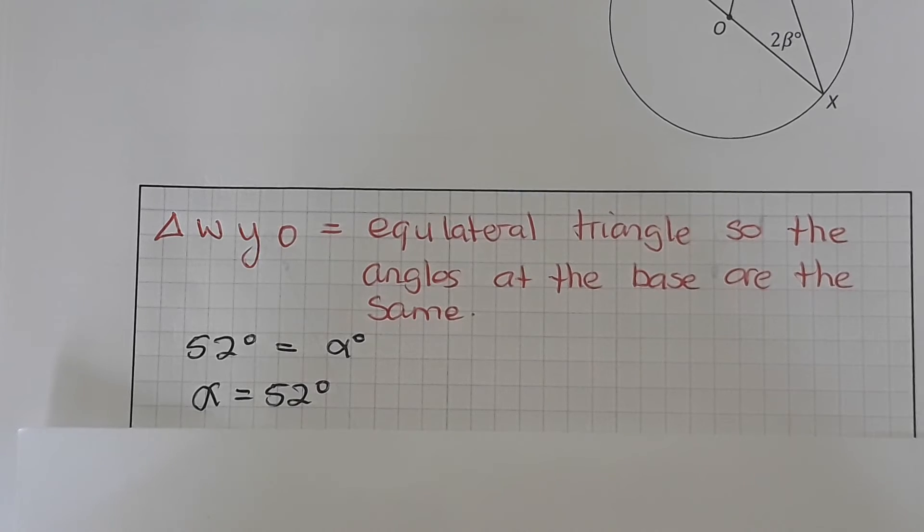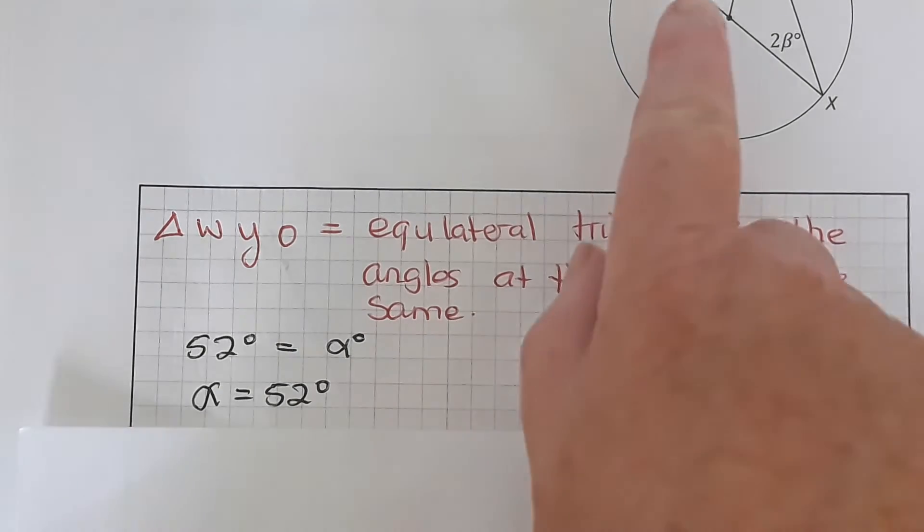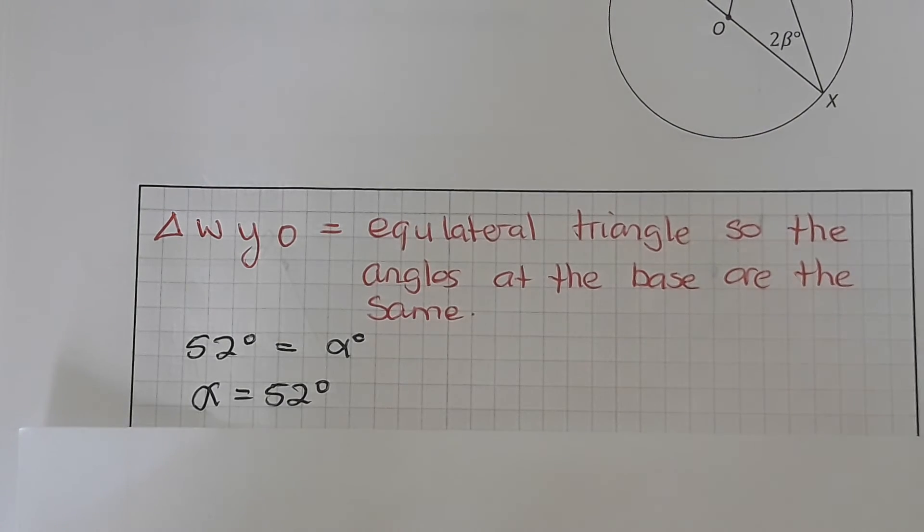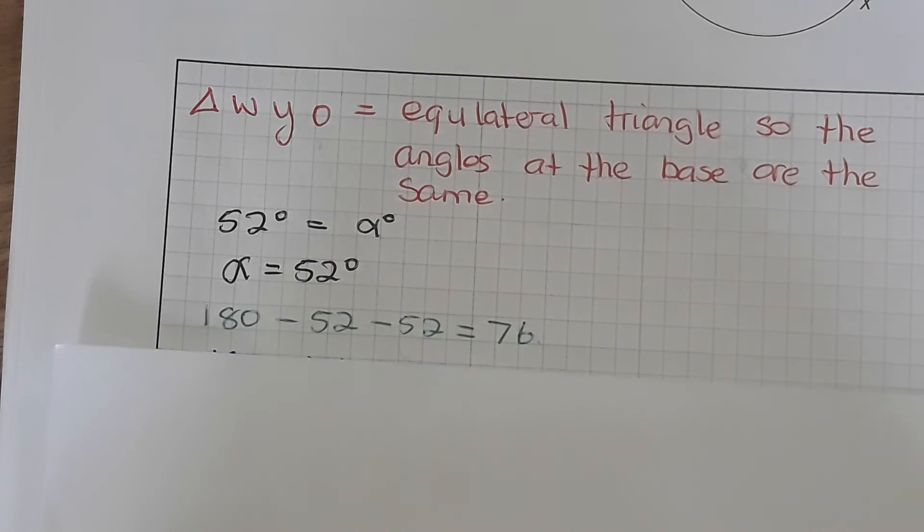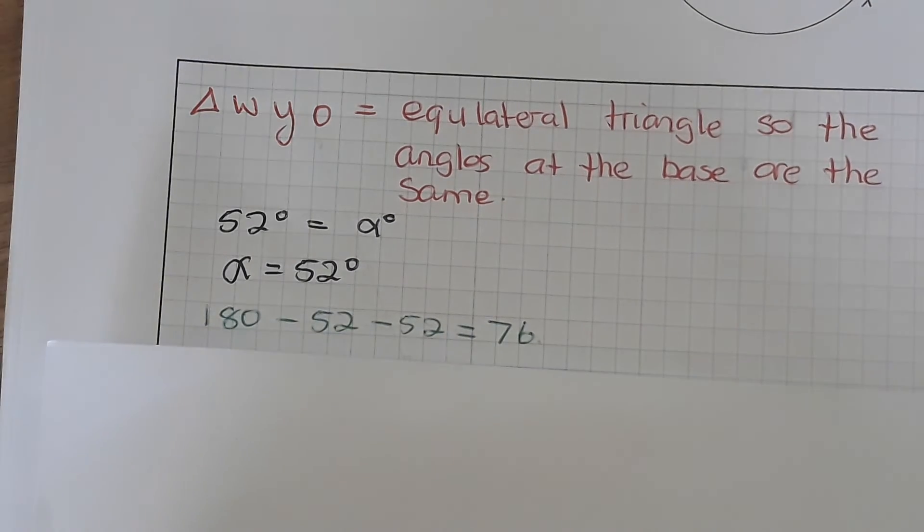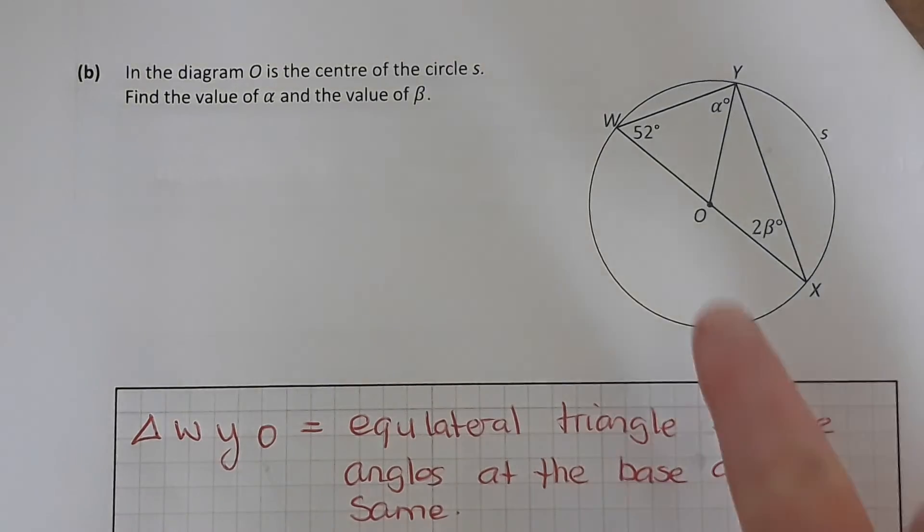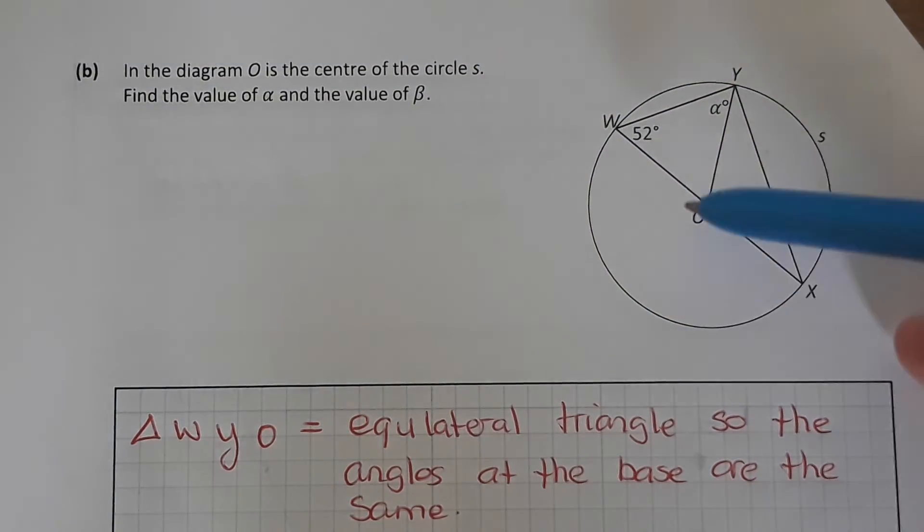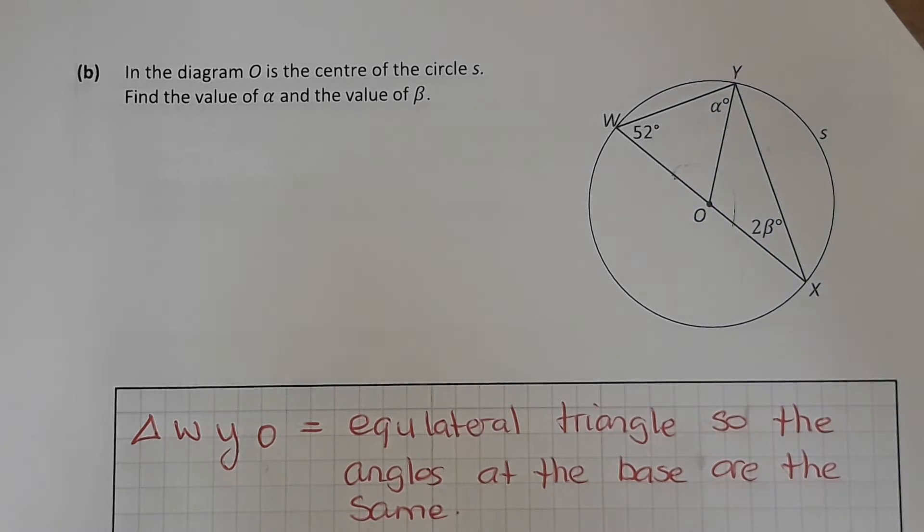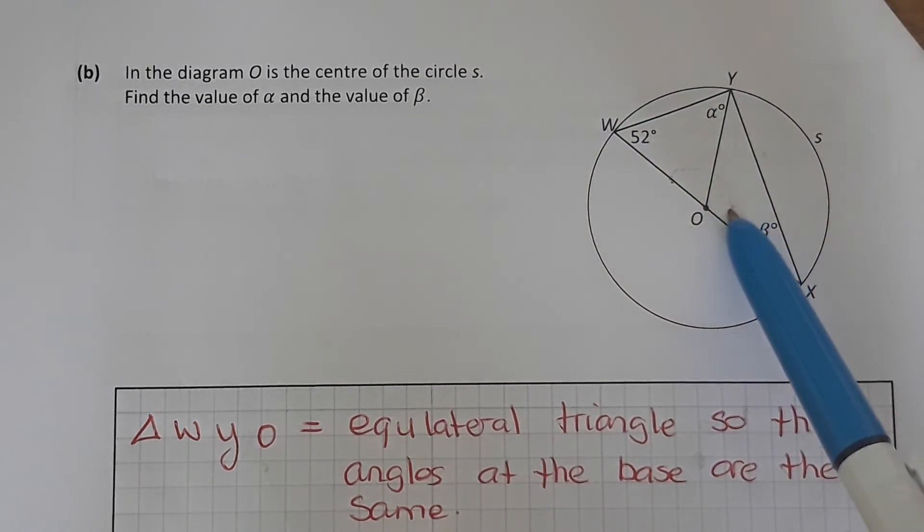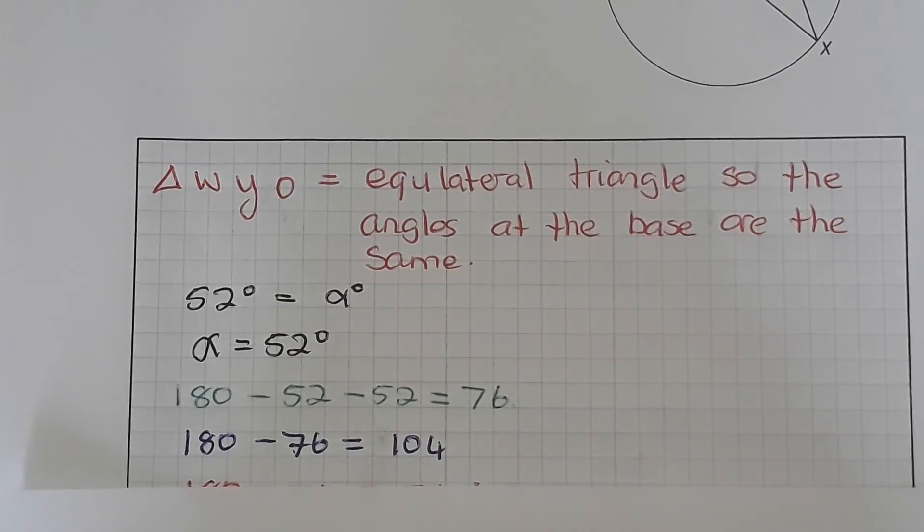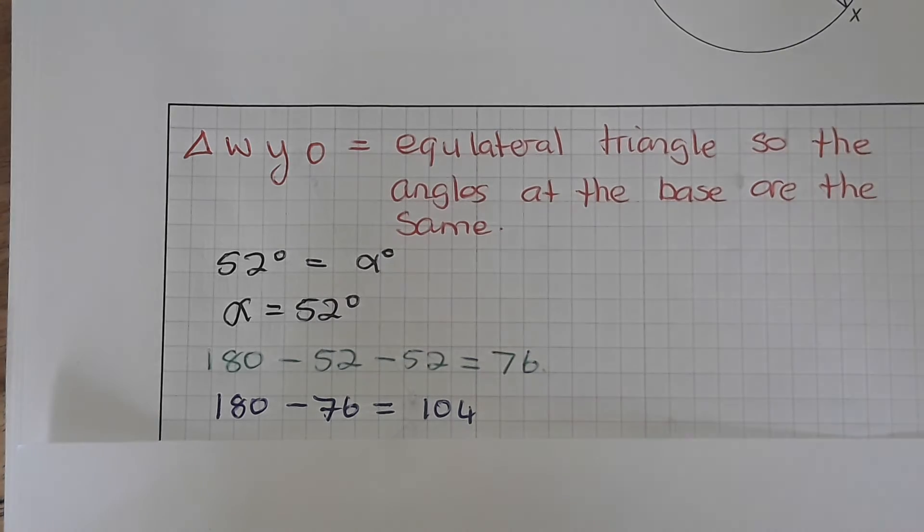Now next you want to find out what beta is. So what we're going to do next is find out what this angle is. The angle, all the three angles in the triangle add up to 180, so what you do is you take your 180, take away the two base angles, your 52 and your 52, you're left with 76. So the angle at the top of WYO is 76 degrees. Now we also know that these two angles together make 180, so again using our 180, we're going to subtract your 76 degrees from the 180 to get that angle there. So 180 minus your 76, and it tells us that that angle there is 104.